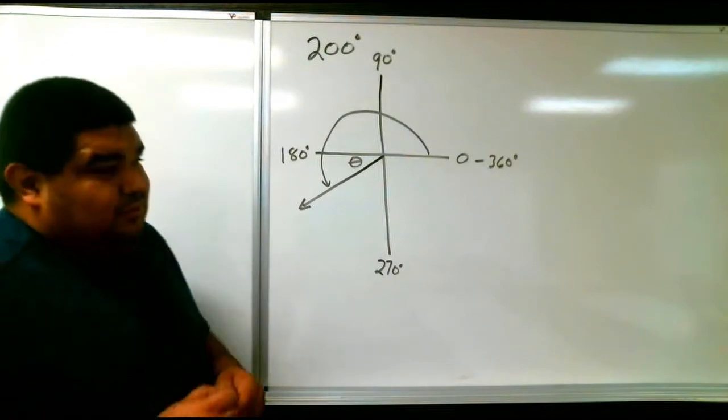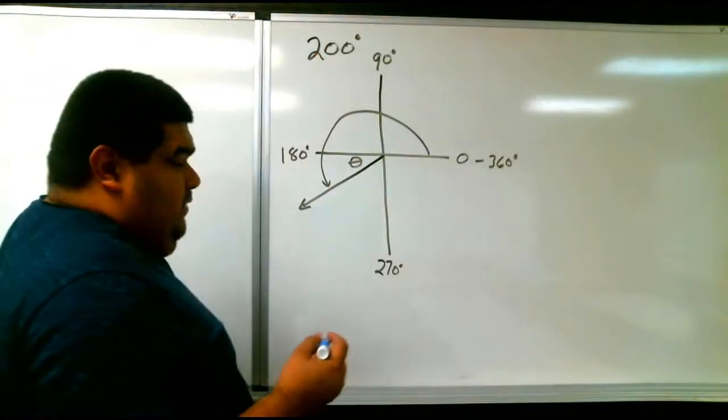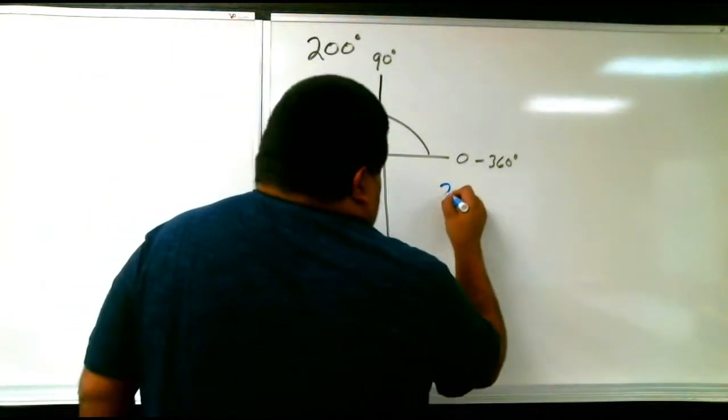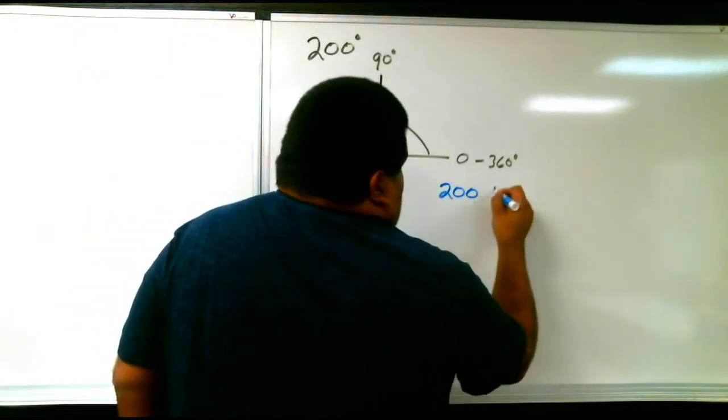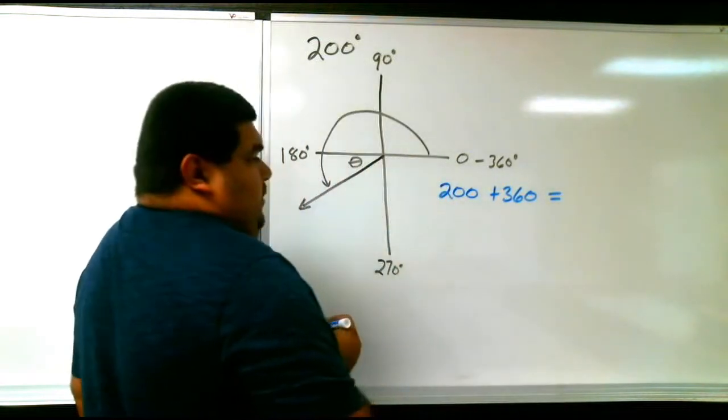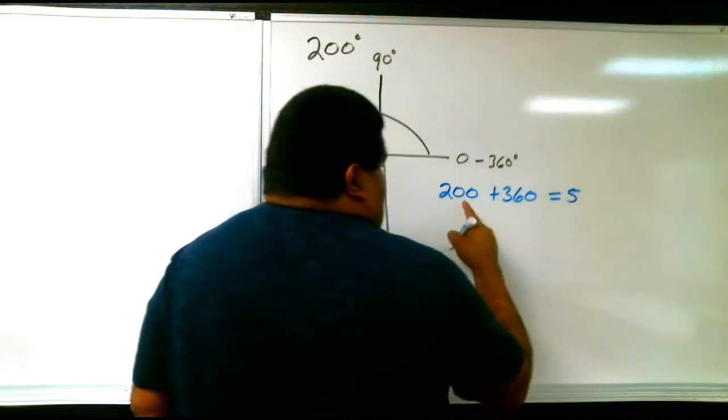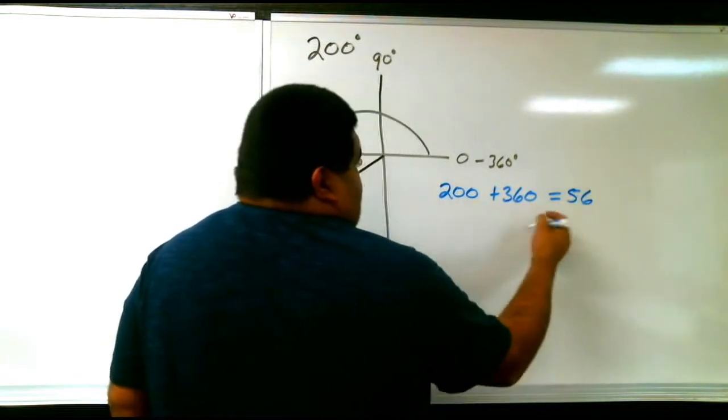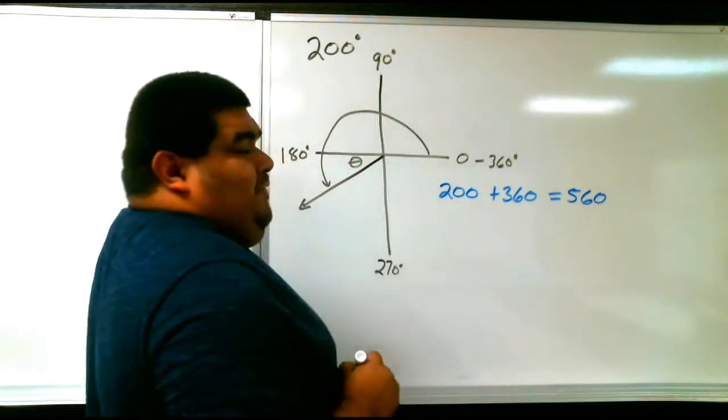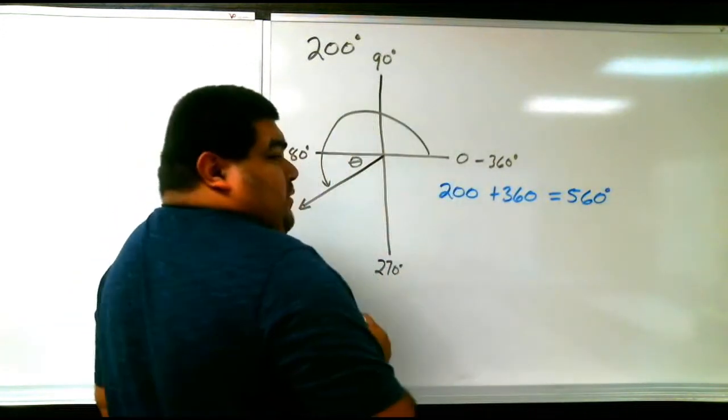So the way we would do it is we would say 200, which is our angle or degree, 200 plus 360 equals, obviously we add them, 2 plus 3 is 5, 0 plus 6 is 6, 0 plus 0 is 0, so 560 degrees. That's our positive.